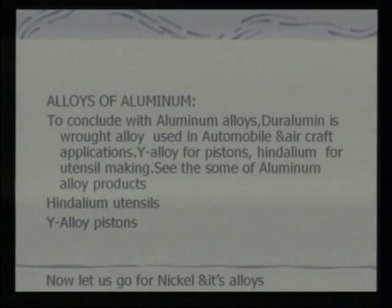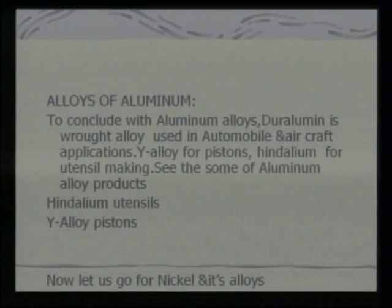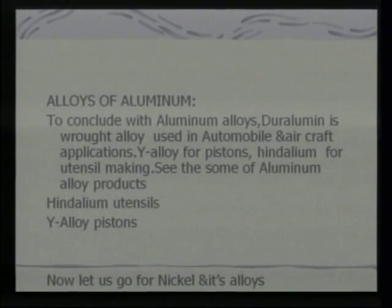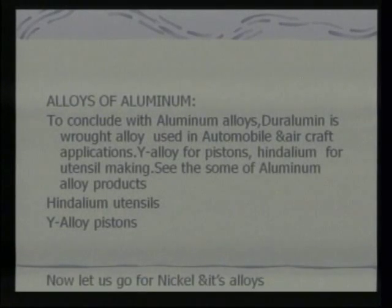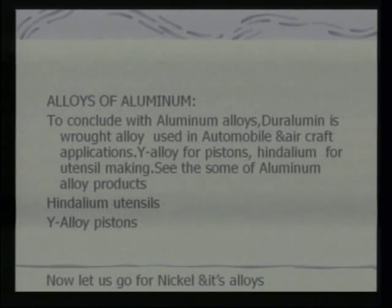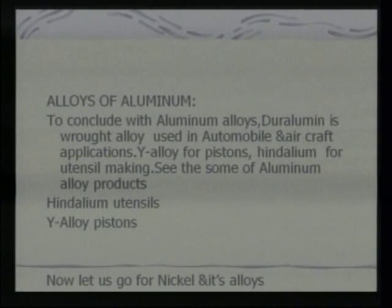Aluminum alloys include duralumin, a wrought alloy containing copper 3.5 to 4.5 percent, magnesium 0.4 to 0.7 percent, manganese 0.4 to 0.7 percent, and balanced aluminum. It is non-magnetic, has resistance to corrosion and good strength, and is used for aircraft and automobile engineering in the form of forgings, bars, sheets, and rivets.